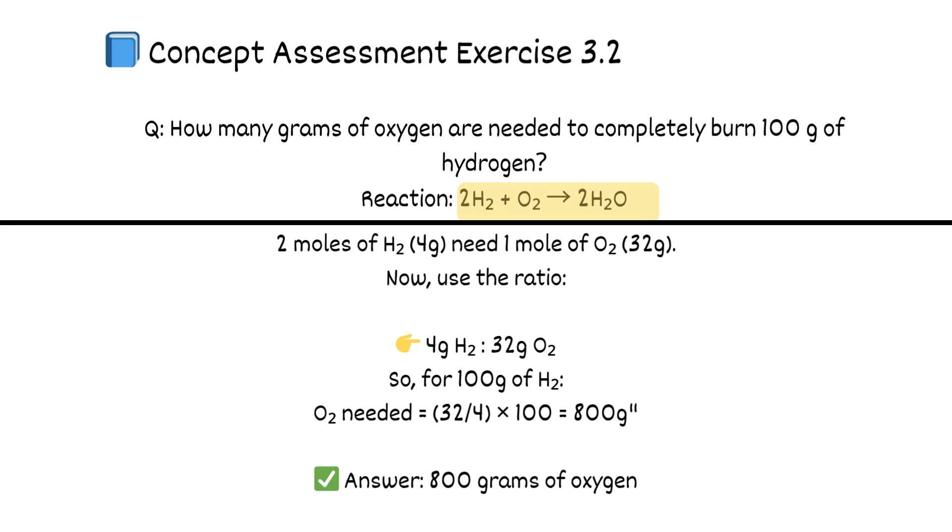So for 100 grams of H2, O2 needed equals 32/4 times 100 equals 800 grams. Answer: 800 grams of oxygen.